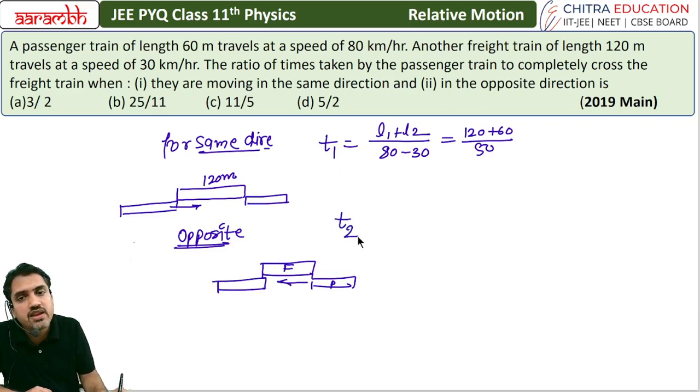We call this t1 and this t2. The length is still 120 plus 60, it has to be covered. But the speed will be 80 plus 30, because in opposite direction we add speeds.